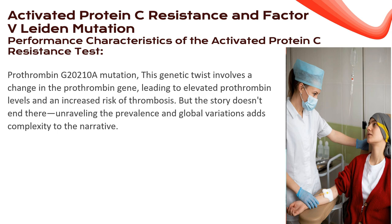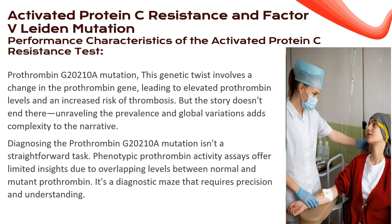The prothrombin G20210A mutation involves a change in the prothrombin gene, leading to elevated prothrombin levels and an increased risk of thrombosis. Diagnosing this mutation isn't straightforward — phenotypic prothrombin activity assays offer limited insights due to overlapping levels between normal and mutant prothrombin, requiring precision and understanding.